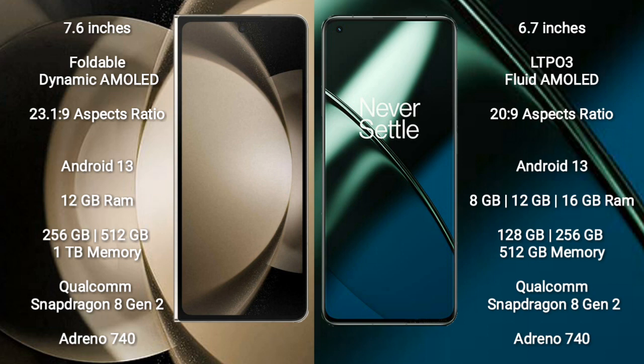The Samsung Galaxy Z Fold 5 comes with 12GB RAM, and 256GB, 512GB, or 1TB of internal storage. It is powered by the Qualcomm Snapdragon 8 Gen 2 processor with Adreno 740 GPU.